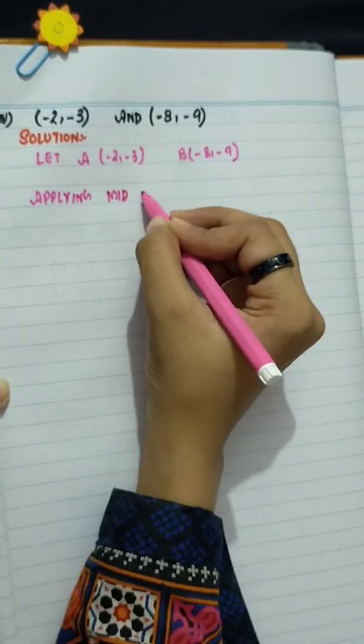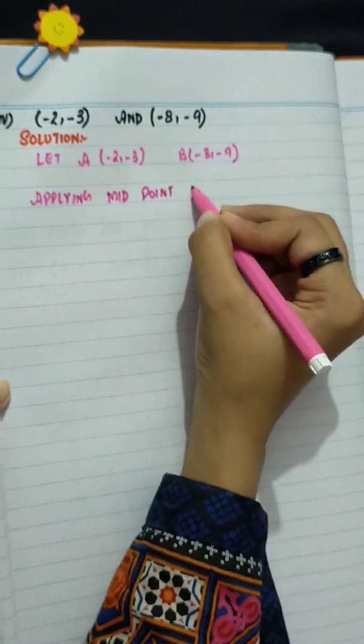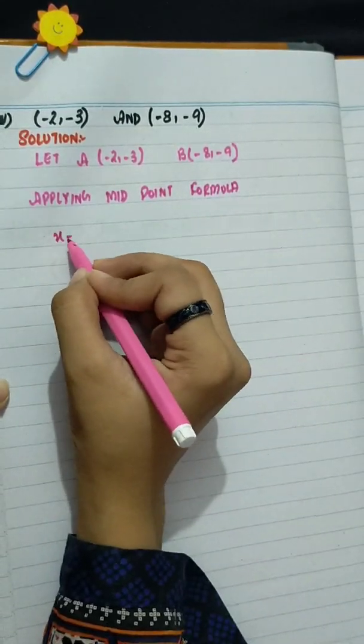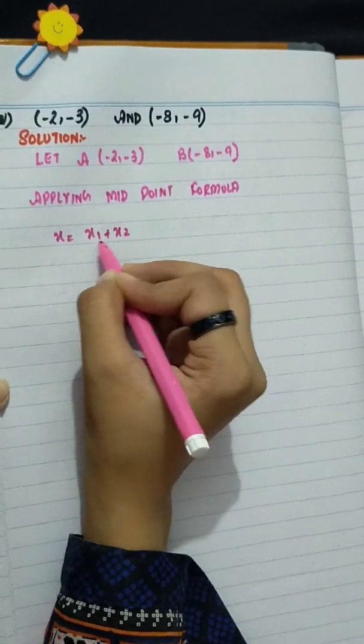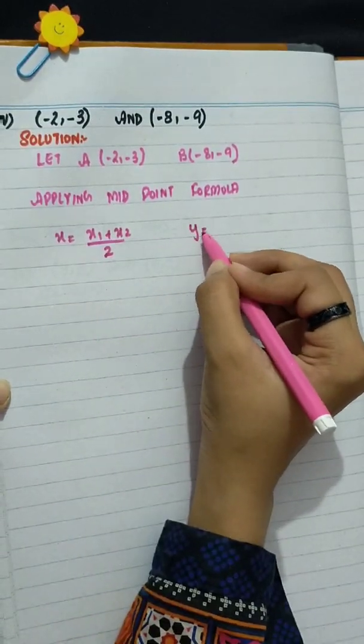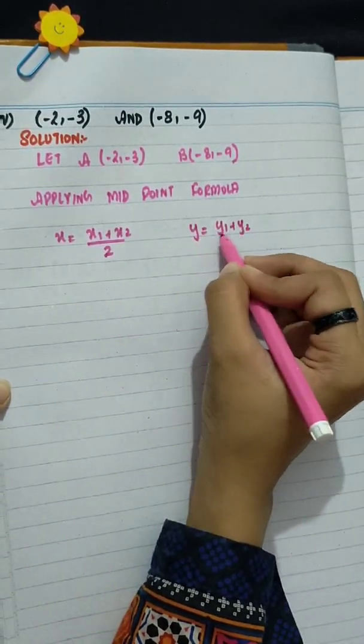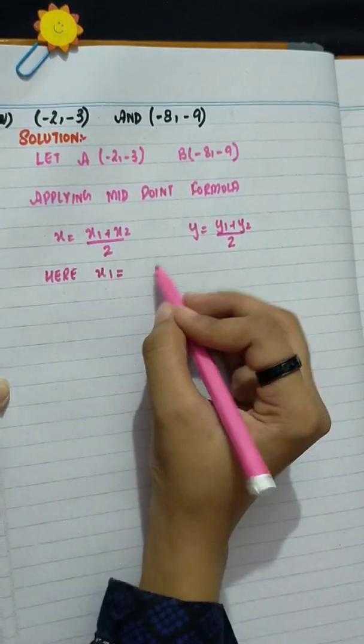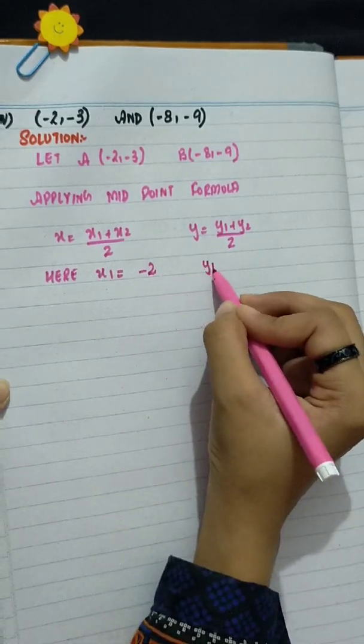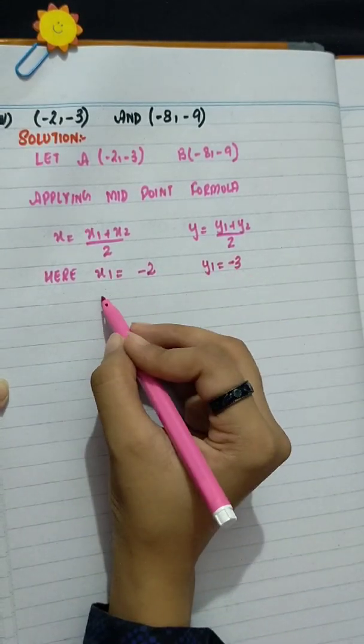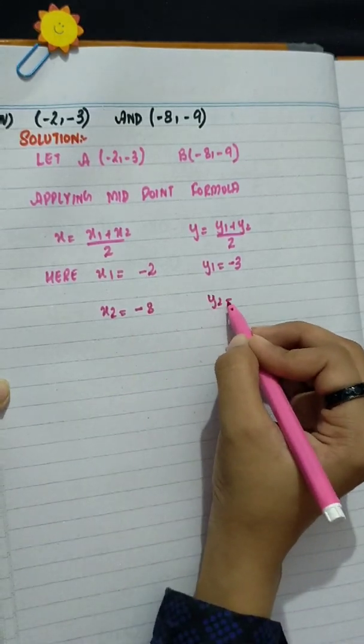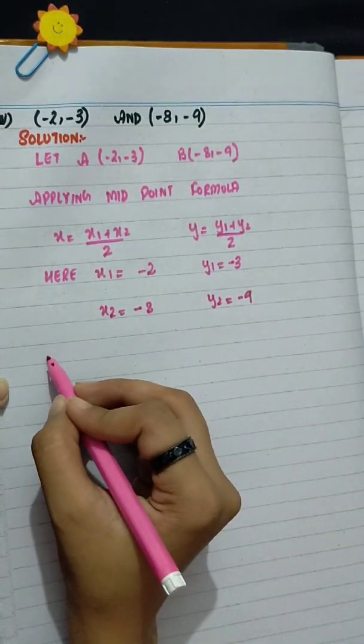Applying midpoint formula. Here, x is equal to x1 plus x2 divided by 2, y is equal to y1 plus y2 divided by 2. Here, x1 is minus 2, y1 is minus 3, x2 is minus 8 and y2 is minus 9.